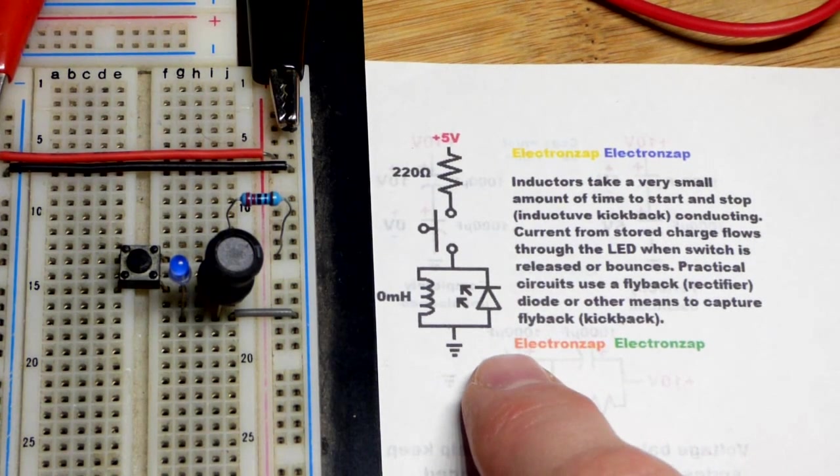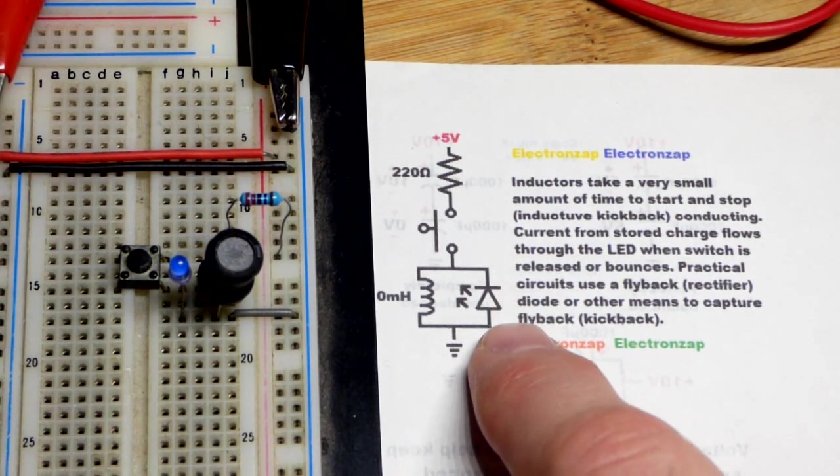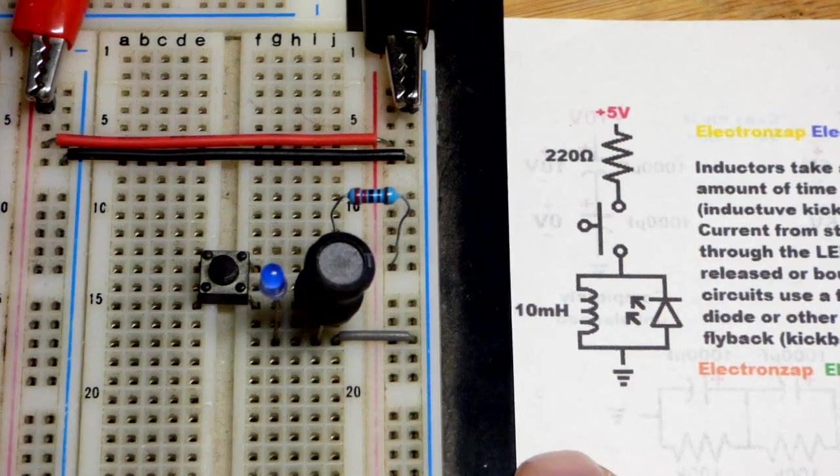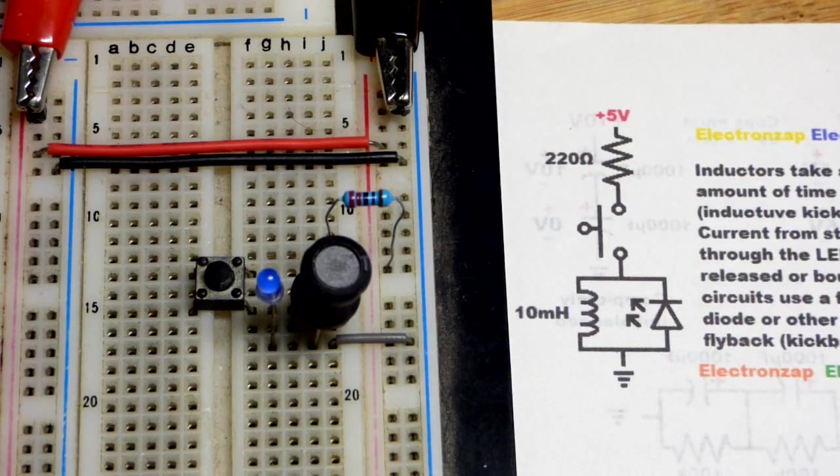So now all this circuit does is demonstrate inductive kickback. We have a reverse bias LED. It's parallel to a 10 millihenry inductor. That's not zero millihenry, of course.